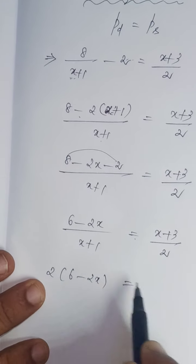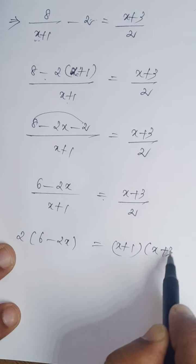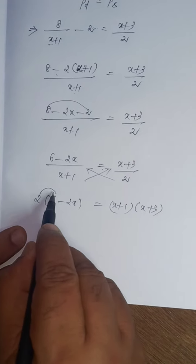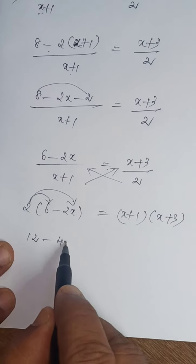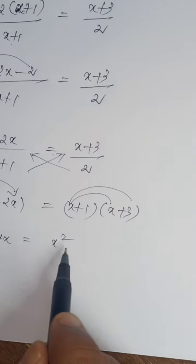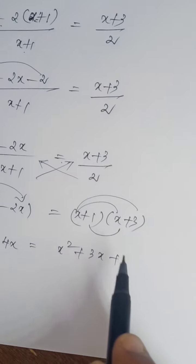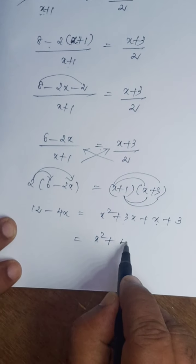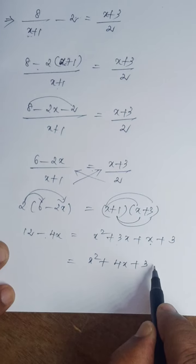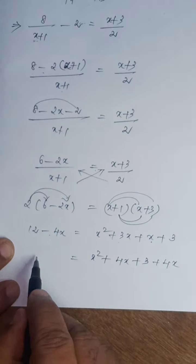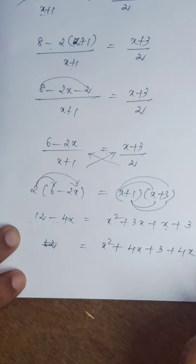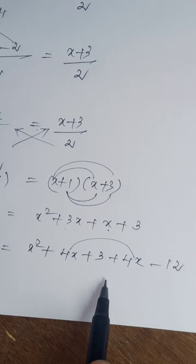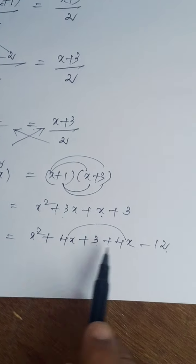Cross multiplying: 2 into (6 minus 2x) equals (x plus 1) into (x plus 3). Expanding: 12 minus 4x equals x squared plus 3x plus x plus 3, which gives x squared plus 4x plus 3. Bringing terms to one side: minus 4x moves to the right as plus 4x, and 12 moves to the right as minus 12. So we get 0 equals x squared plus 8x minus 9.